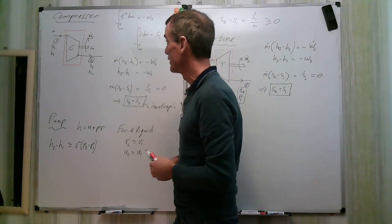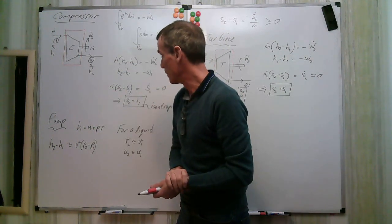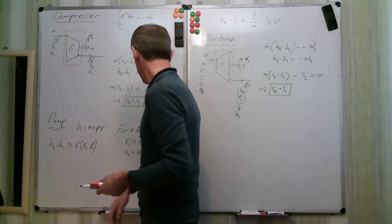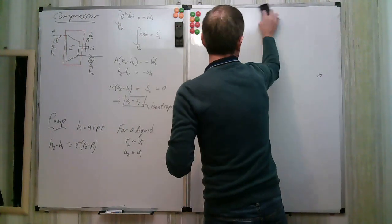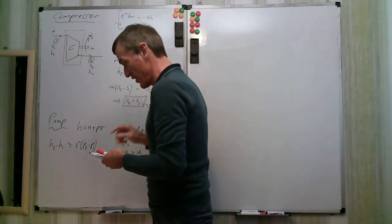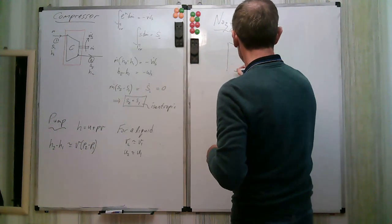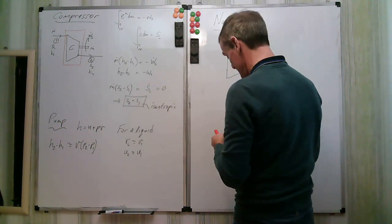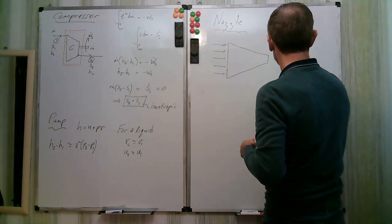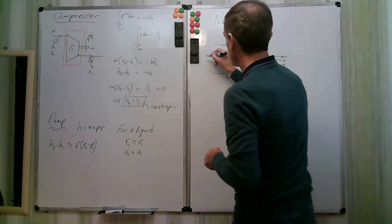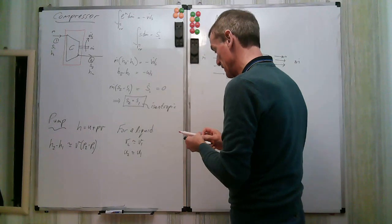The pump is also assumed isentropic — the same analysis as the compressor, with the same assumptions about entropy production being negligible. The design goal is again to avoid entropy production. Now let's look at the nozzle. A nozzle has flow entering and exiting with a control volume around it, states 1 and 2.